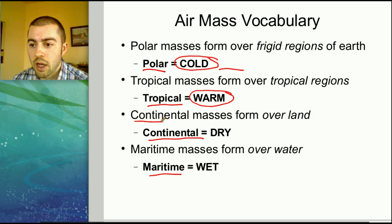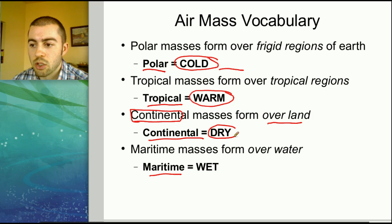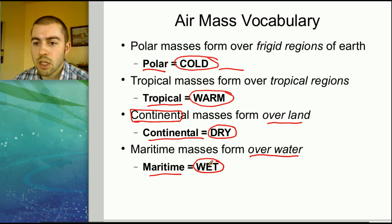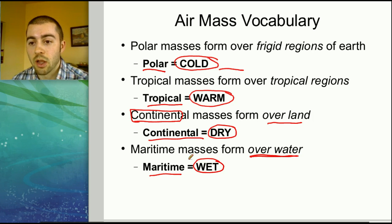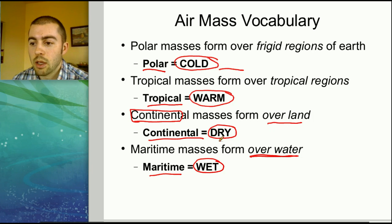Continental air masses — the word continental has the word continent in it, and continents are made of land. So continental air masses form over land and are going to be dry, because they're not going to have as much moisture as an air mass that formed over water. Maritime air masses, on the other hand, we can think of as wet or moist or humid, because they form over water and get a lot of evaporation.